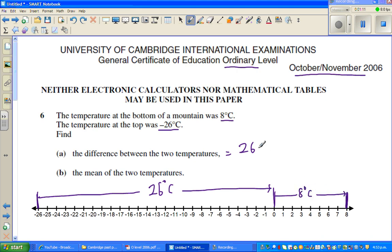Pretty easy. So that is 26 plus 8, which is 34 degrees centigrade.